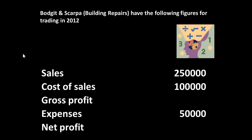Bodgett and Scarpa, building repairers — you've probably all used that firm once or twice in your lives and probably not going to use it again. Bodgett and Scarpa have the following figures for trading in 2012. We've got their sales, their cost of sales, and their expenses. We're going to determine the ratio of sales to cost of sales. We've got the figures there: 250,000 and 100,000.